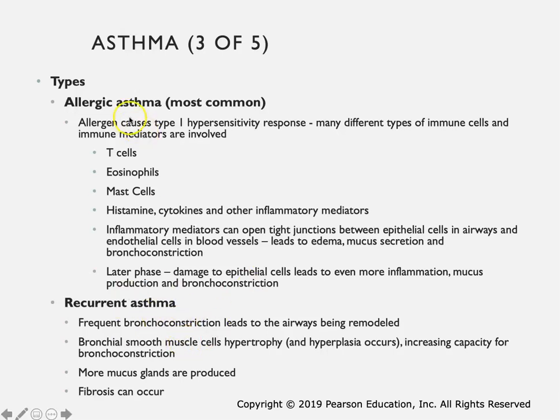If you're talking about recurrent asthma, and this can still be allergic asthma that keeps happening, over time if this inflammatory process is happening frequently it leads to more permanent damage. Those smooth muscle cells can actually undergo hypertrophy and hyperplasia - cells can get bigger and more cells can be produced. A larger or thicker smooth muscle wall narrows the airways in general. Even more mucous glands will be produced, and it is also possible that fibrosis can occur. Recurring asthma with frequent inflammatory responses can then lead to more permanent damage, exacerbating the symptoms during an acute episode.